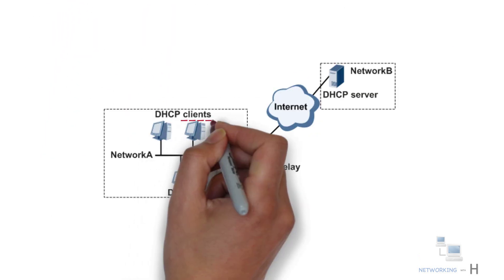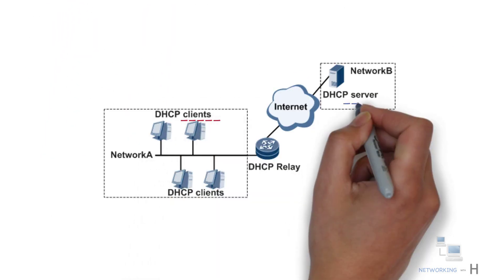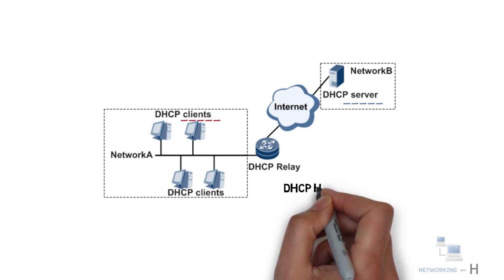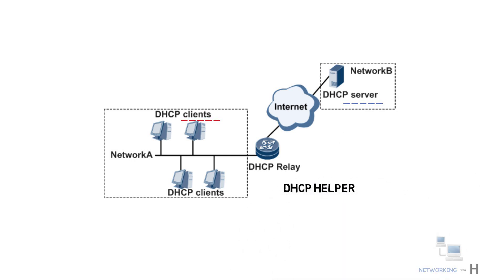If the client and server are on different subnets, a DHCP relay agent, also known as a DHCP helper agent, must be used in that case.